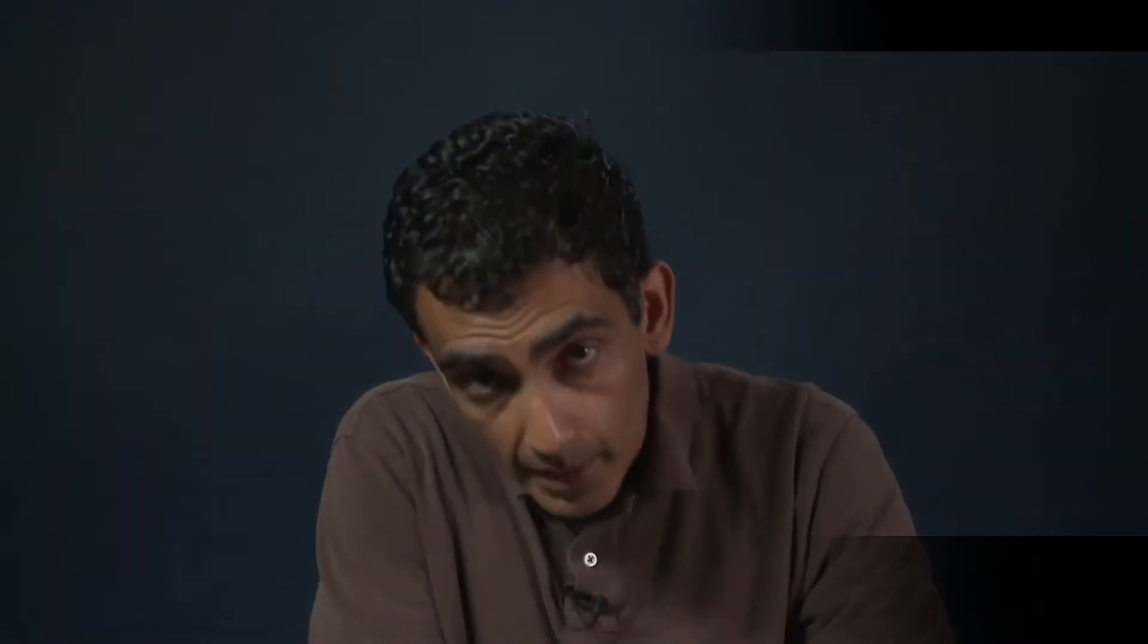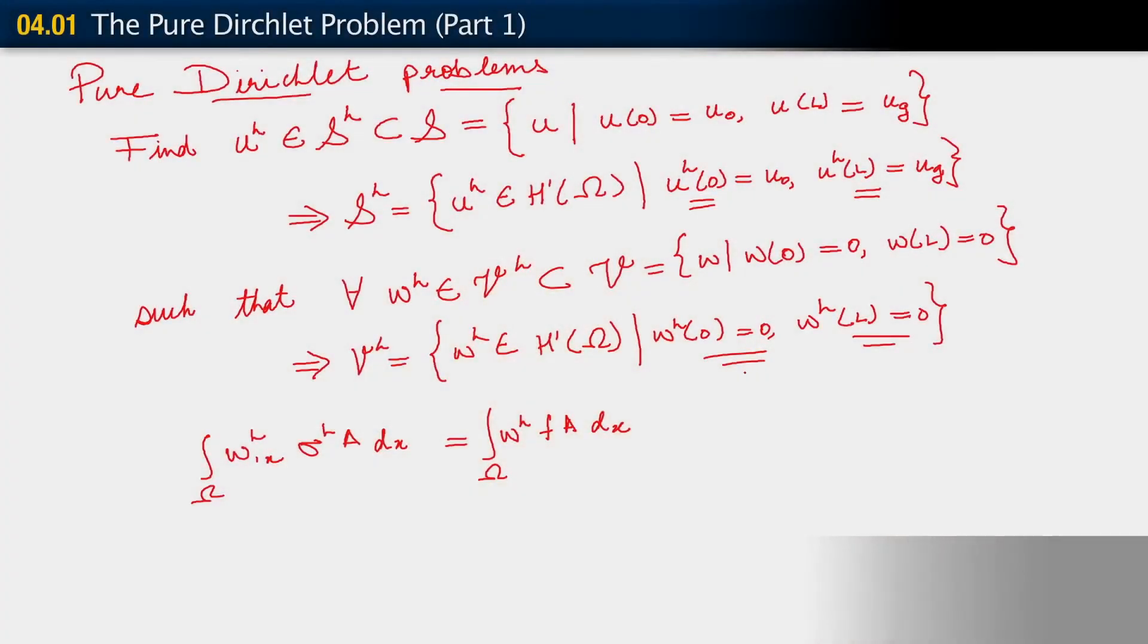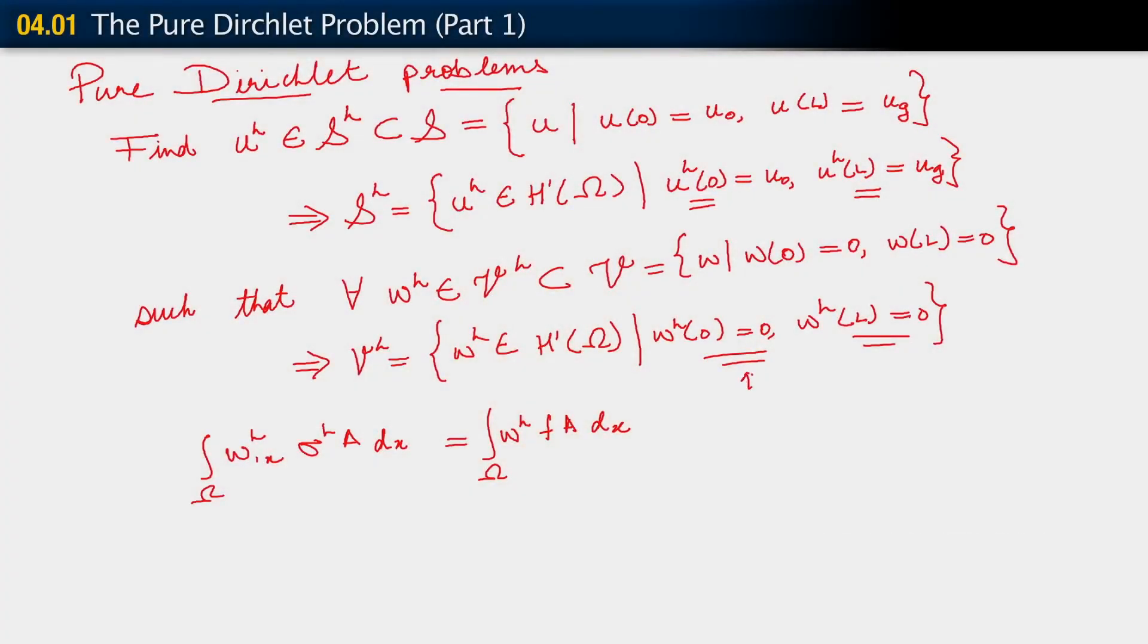And we're done. There is no Neumann data. There are no Neumann boundary conditions in this problem, so we don't have the contribution from the traction. Essentially the formulation is the same as we've studied for the Dirichlet-Neumann problem.